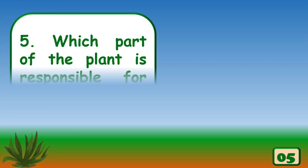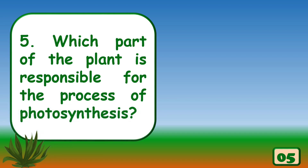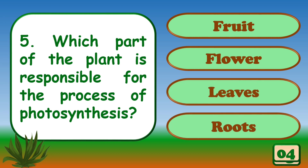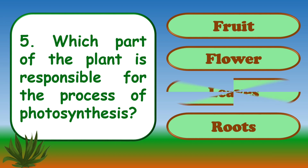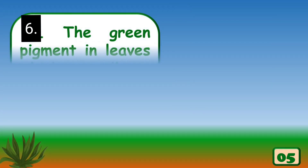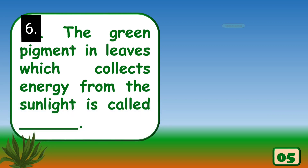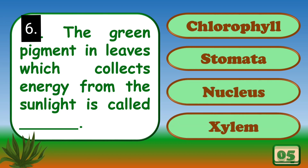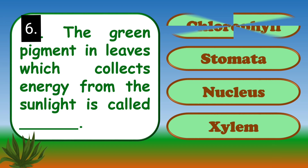Which part of the plant is responsible for the process of photosynthesis? The green pigment in leaves which collects energy from the sunlight is called chlorophyll.